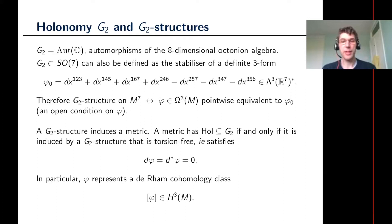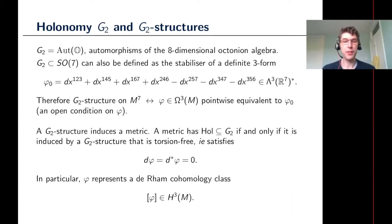Another convenient description for differential geometry: G2 is the stabilizer of an alternating three-form on a seven-dimensional space, obtained by taking the multiplication table on the imaginary octonions. Interestingly, this three-form has an open orbit in the space of all three-forms, so if you deform it a little bit you still have something with stabilizer isomorphic to G2. You can therefore define a G2 structure on a seven-manifold in terms of a differential three-form that at every point looks like the standard three-form, and this condition is open under perturbation.